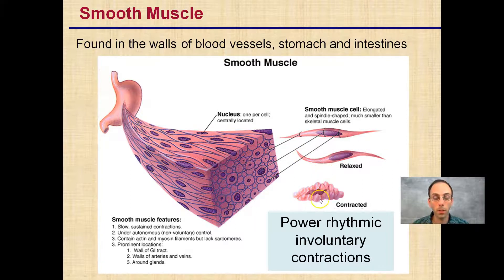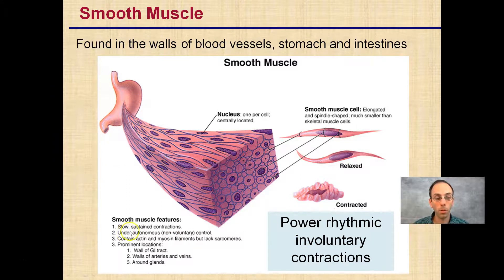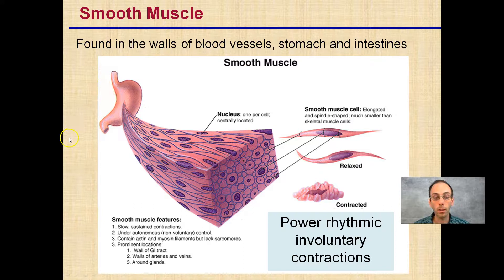That relaxed spindle shape, and then here's that contracted, bunched look. The predominant locations are the wall of the GI tract — that's the gastrointestinal tract — walls of the arteries and veins, and around glands is typically where you'll find smooth muscles. So even though we don't have direct control over them, they do provide us with some very necessary everyday functions of the body.